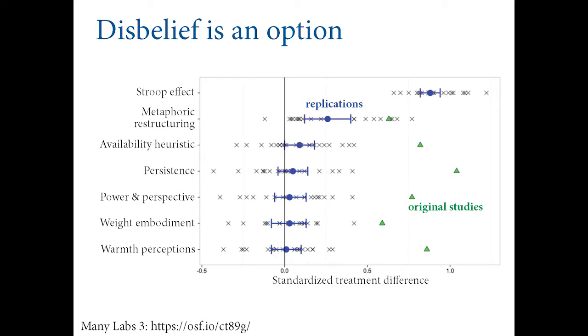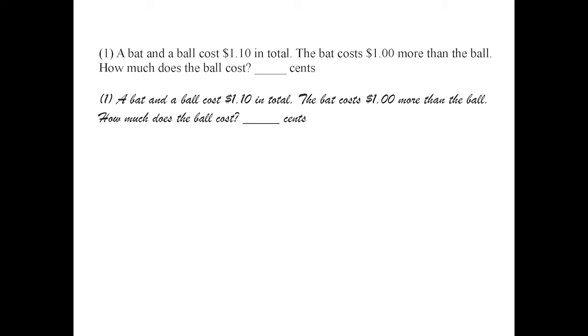Unfortunately, when people try to replicate the very studies he cites in that book, they mainly do not replicate. This is something I'm sure he wishes he could take that particular quote back. Most of the strong conclusions, the priming studies he talks about in that book have not replicated very well. Here's one example from the many labs project, their third round.